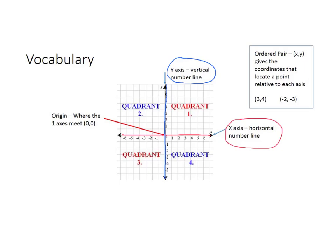Now, the origin, let me get a different color over here. The origin is where the two axes meet, which is at (0, 0). The 0 on the x-axis crosses the 0 on the y-axis, and that's called the origin.